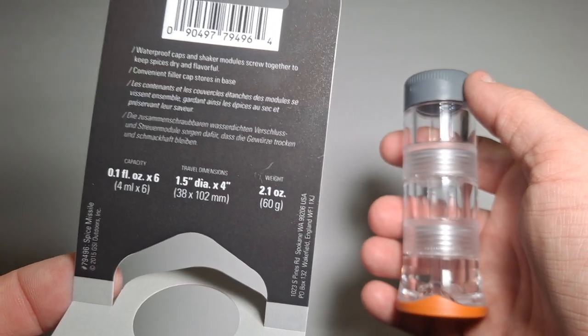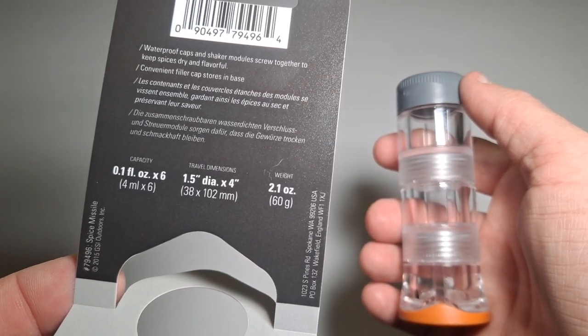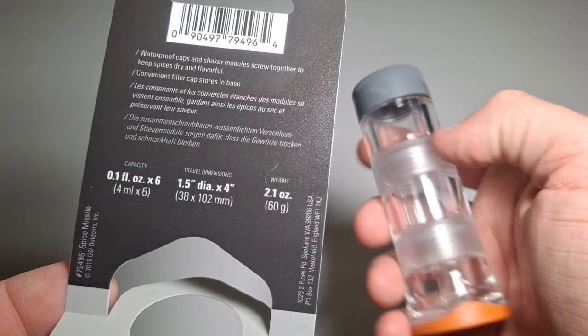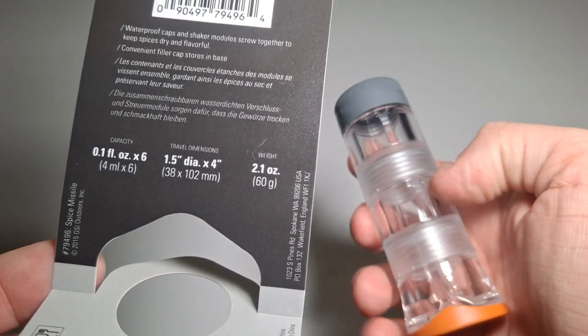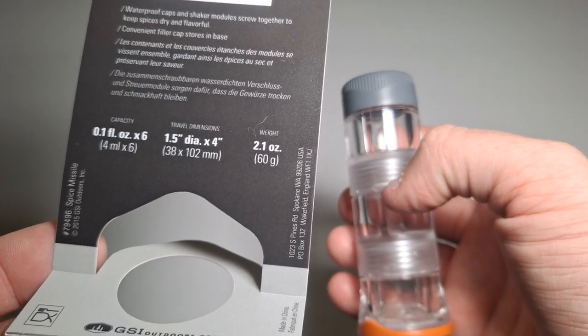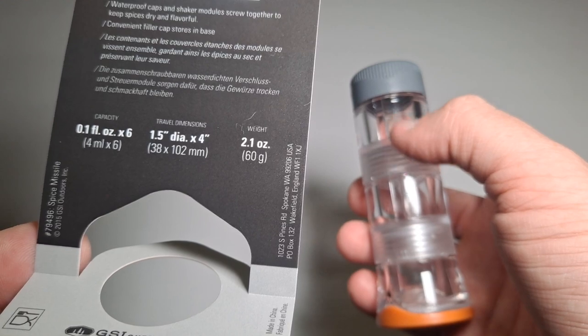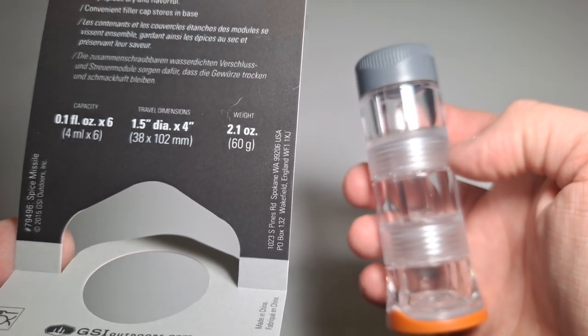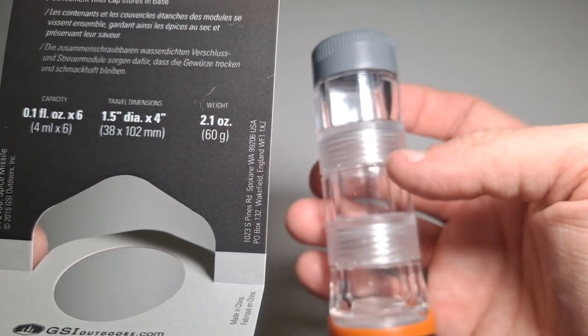So here are the dimensions. Capacity is 0.1 fluid ounces times six. It's actually six compartments. Doesn't look like it, but there's six. I'll show you. Travel dimensions is one and a half inches in diameter by four inches tall, and weighs 2.1 ounces or 60 grams.